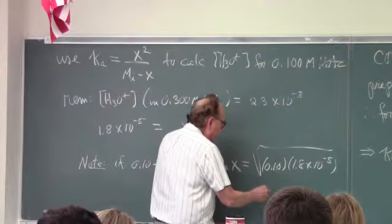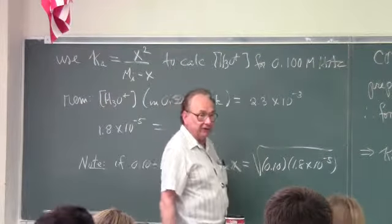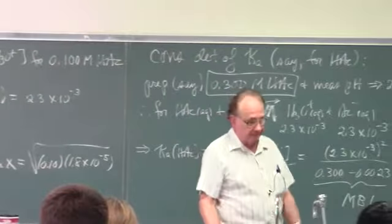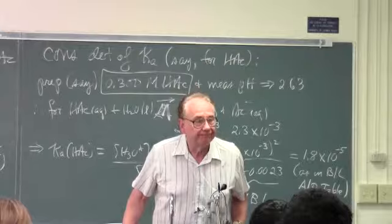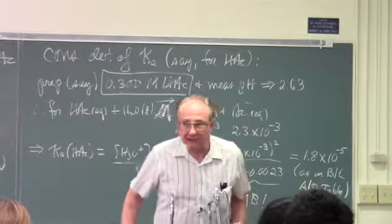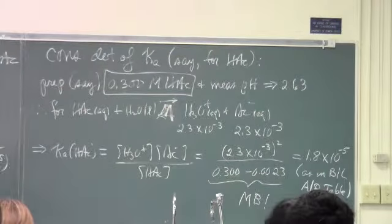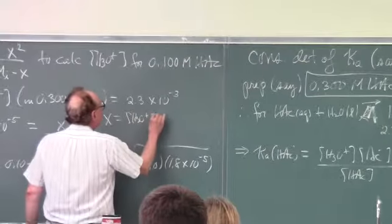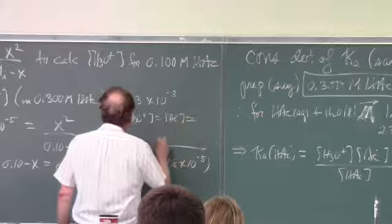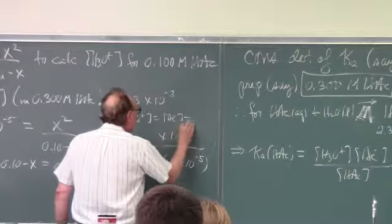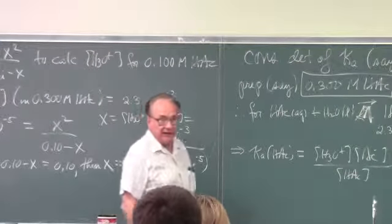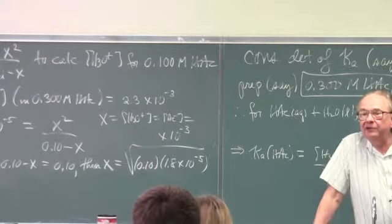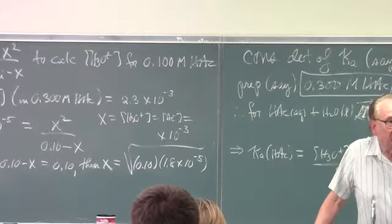That means I cross multiply and find that x is the square root of 0.10 times Ka. Alright, this gives me the square root of 1.8 times 10 to the minus 6. What square root of 10 to the minus 6? 10 to the minus 3.